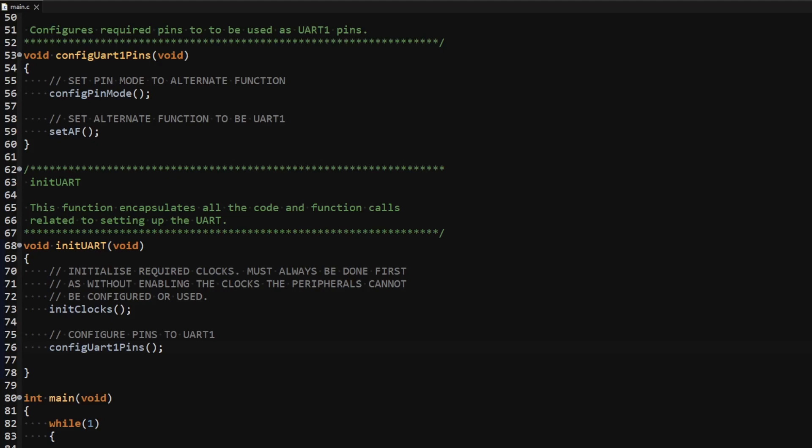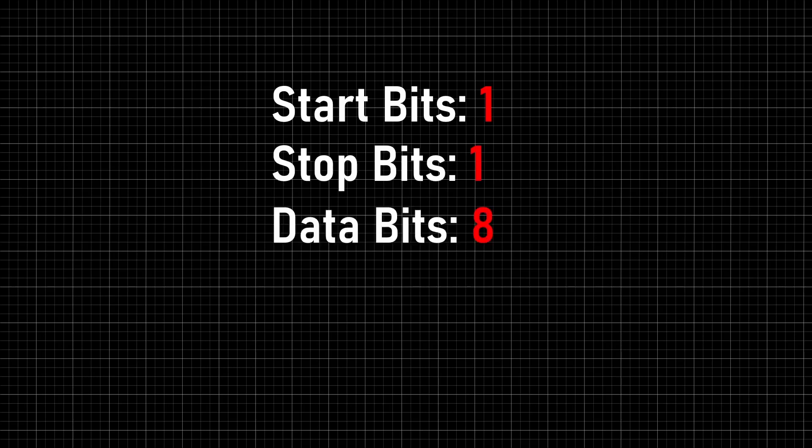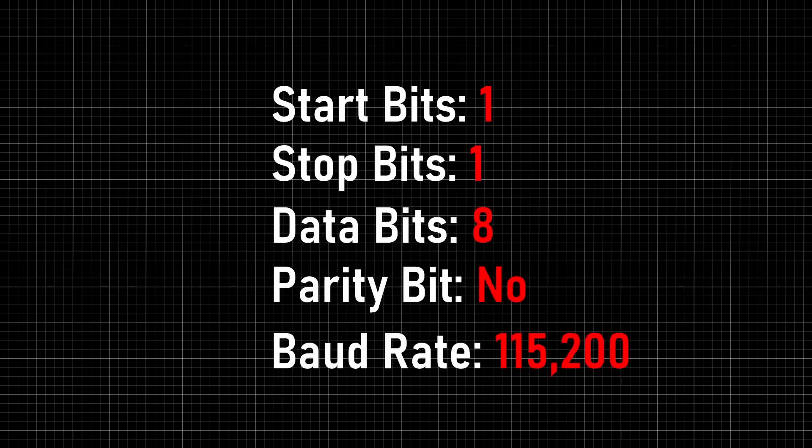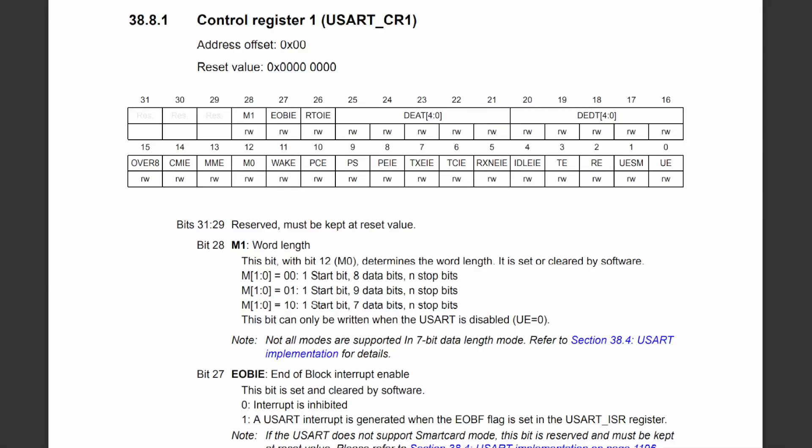With the pins configured, let's move on to configuring the UART itself. I will set the UART up to have 1 start bit and 1 stop bit, 8 data bits, no parity bit, and a baud rate of 115,200. I will not be using interrupts, DMA, or setting the UART into different modes of operation, so I will only detail bits relevant to getting my version of UART going. Any interrupt, DMA, or feature enabling bits will be set to 0 to keep them disabled.